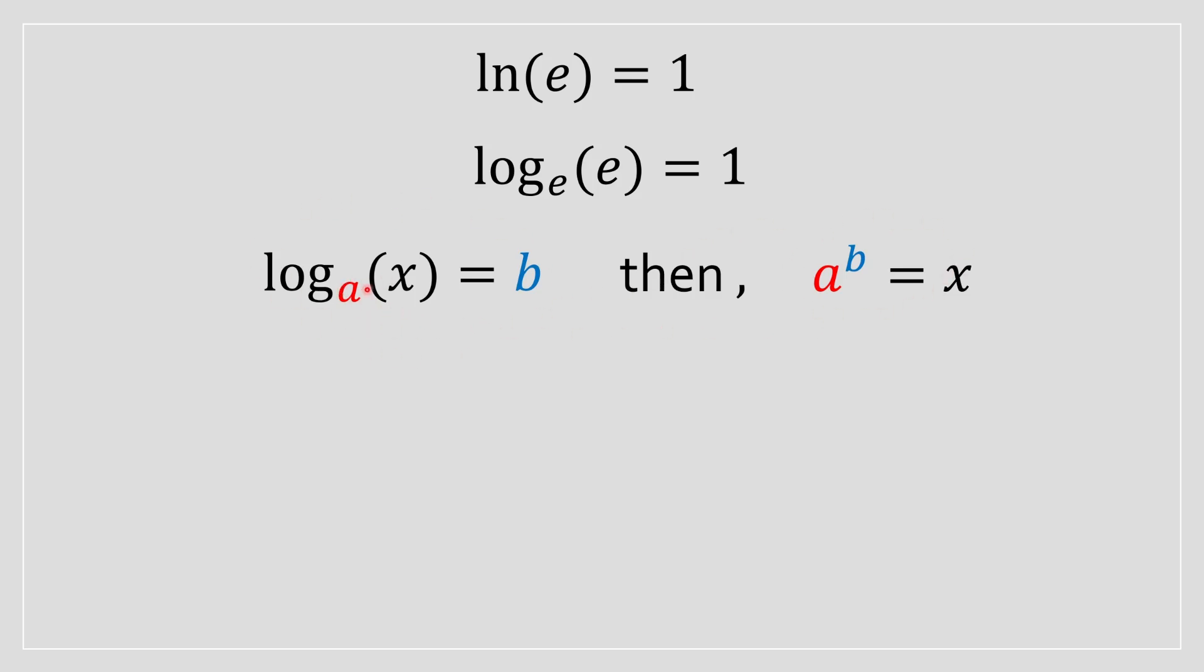Therefore, we know that the a variable corresponds to the base of the log, which in this case is going to be equal to e, the x is going to be the e, and b in this case is going to be 1. We can rewrite it in this format.